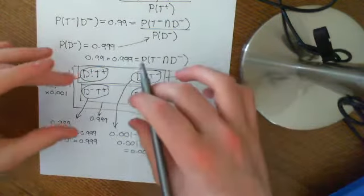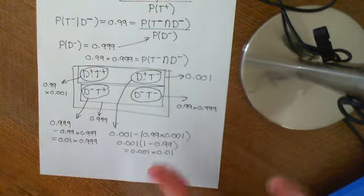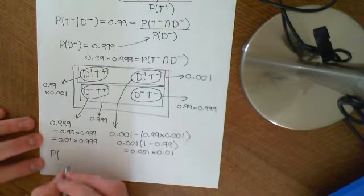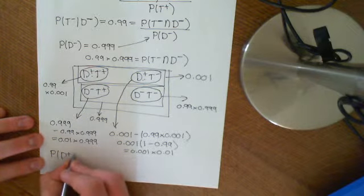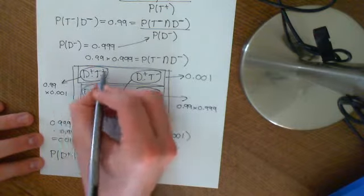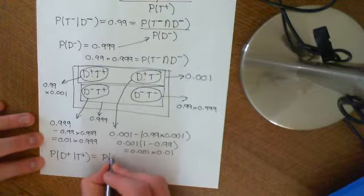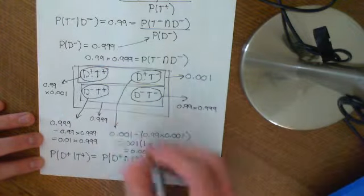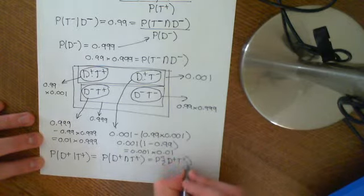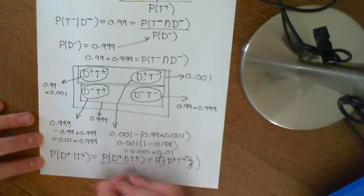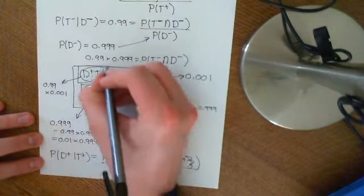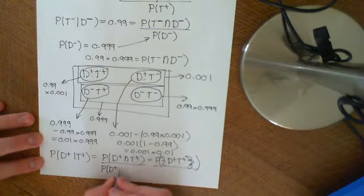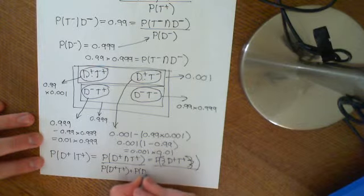So we now have the probability of every single individual outcome. Our original question was: given that you test positive, what is the probability that you actually do have the disease? Well, we know that is the probability that you have the disease and test positive — the probability of the specific outcome D plus T plus — divided by the probability that you test positive, which is the probability that you have the disease and test positive, plus the probability that you don't have the disease and test positive.